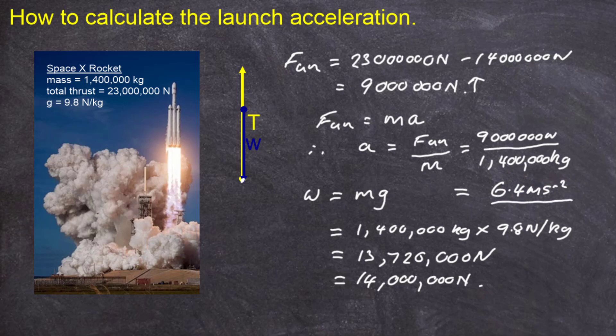So we need to know what that answer means. It means that initially at launch, the rocket, with these forces acting on it, is going to accelerate upwards at 6.4 meters per second every second. Now that means that its velocity upwards is going to increase by 6.4 meters per second every second.